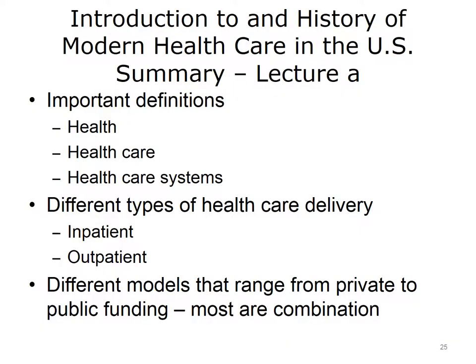This concludes Lecture A of Introduction to and History of Modern Health Care in the U.S. In summary, this lecture has defined three important terms: health, health care, and health care systems. There are many different types of health care delivery, ranging from inpatient facilities — including hospitals and short- and long-term care facilities — to outpatient facilities where patients visit for specialty care and laboratory work. Finally, health care systems vary greatly from country to country, with most systems characterized by a combination of public and private funding.